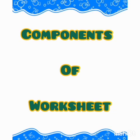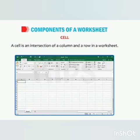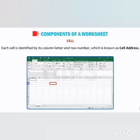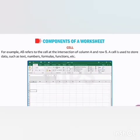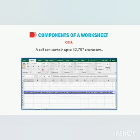The next topic is components of the worksheet. A cell is an intersection of a column and a row in a worksheet. Each cell is identified by its column letter and row number, which is known as the cell address. For example, A5 refers to the cell at the intersection of column A and row 5. A cell is used to store data such as text, numbers, formulas, functions, etc., and a cell can contain up to 32,767 characters.